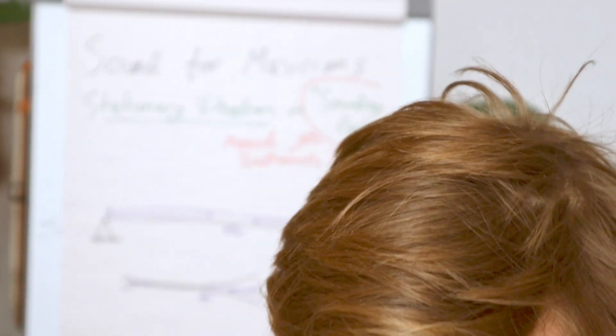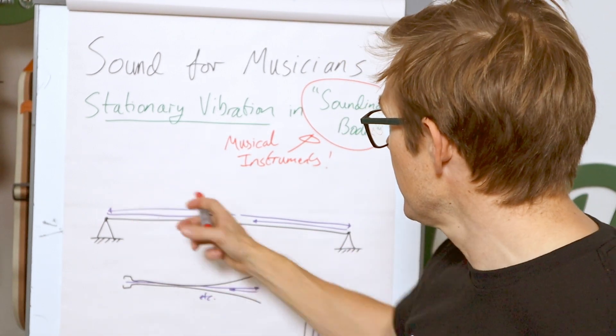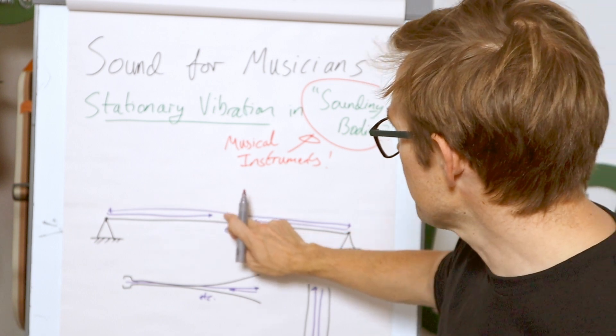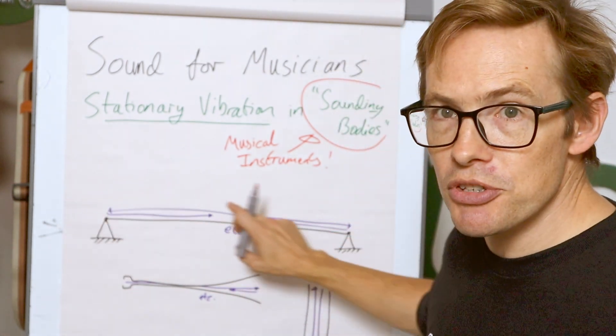This is where a string is vibrating in all these numerous modes and they all overlay and keep passing each other and crossing each other. This is how musical instruments make sound. You can see the wave travels up and then back and up and back and they keep crossing over and passing.